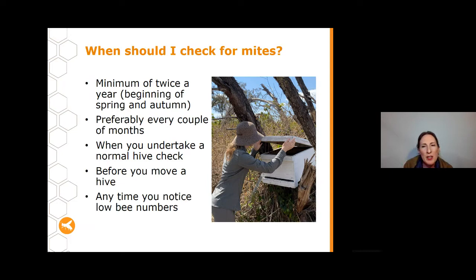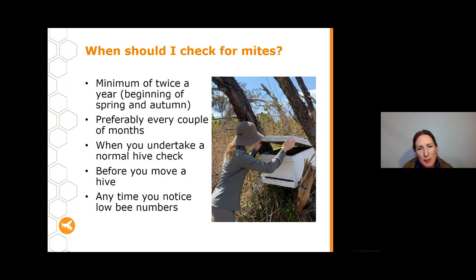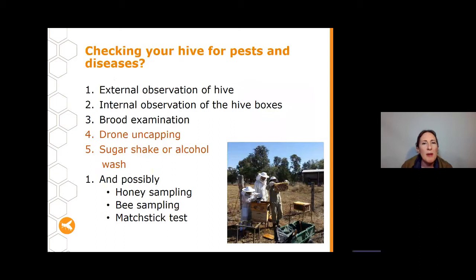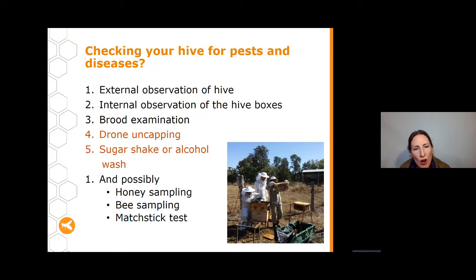When should you be checking for these pests? You should do it on a similar schedule to your brood inspection — at least twice a year, with spring and autumn being good times. If you can do it more often, that's great. Any time you move your hive, make sure you've checked it beforehand. Any time bee numbers are unusually low, that's one of the signs of external mites. Do your mite checking as part of your regular hive inspection: external observation, internal hive check, brood examination, followed by drone uncapping and a sugar shake or alcohol wash.